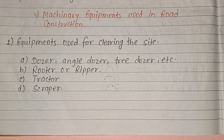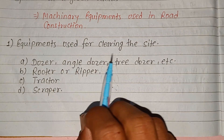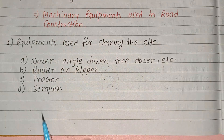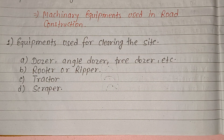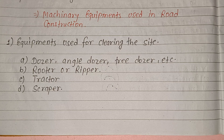Machinery comments used in road construction: equipment used for clearing the site includes dozers, graders, and compaction equipment for subgrade.